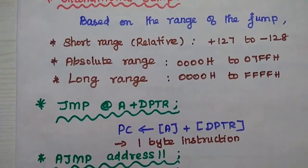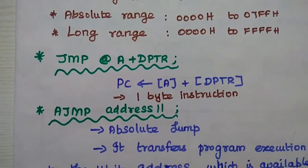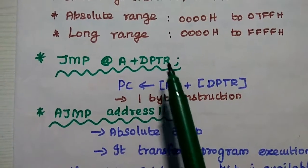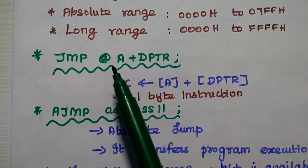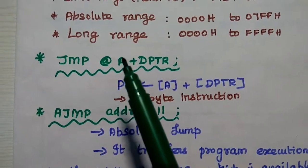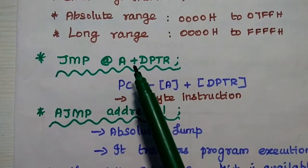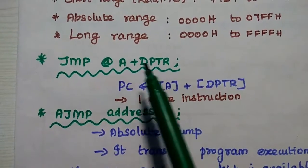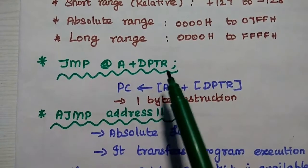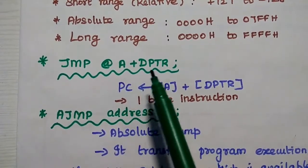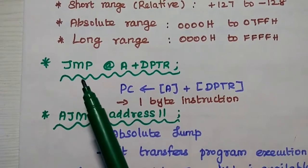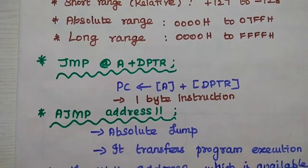The first instruction is JMP, which represents an unconditional jump at A plus DPTR — that is indirect memory addressing mode. We transfer program control to the memory location stored at A plus DPTR. Here A means the accumulator (8-bit data) and DPTR means the data pointer (16-bit data). We add these two contents to get the memory location, and program control is transferred there.